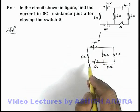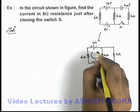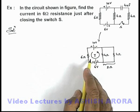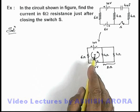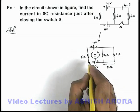There is just a single loop here. In this loop we can see there will be a current flow, which is i, and the value of i can be directly calculated by writing the KVL equation.